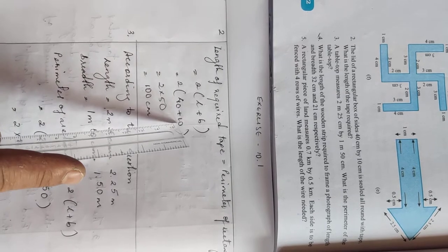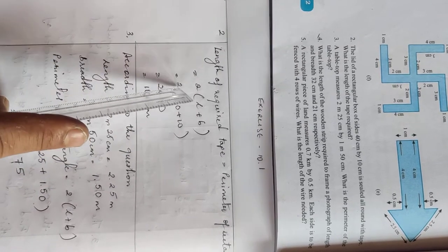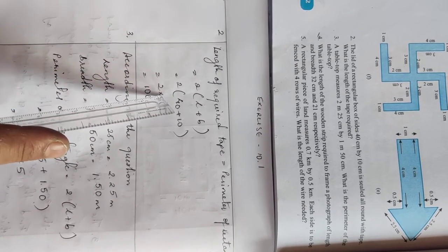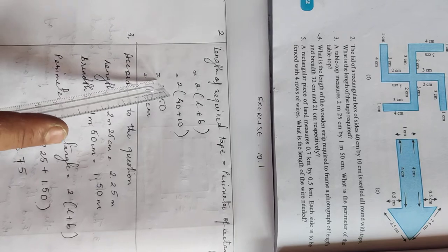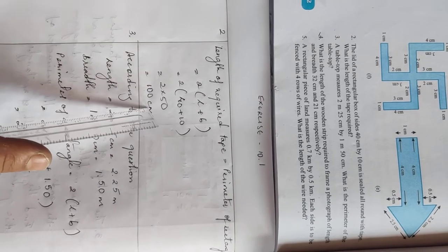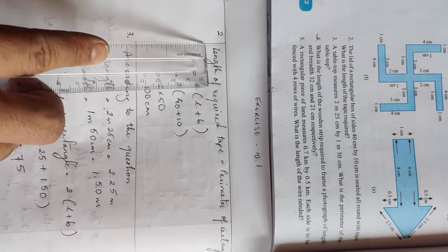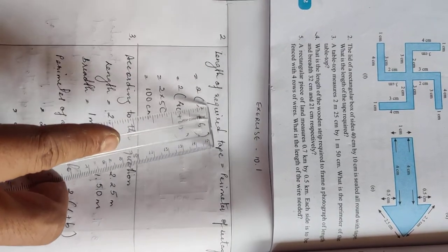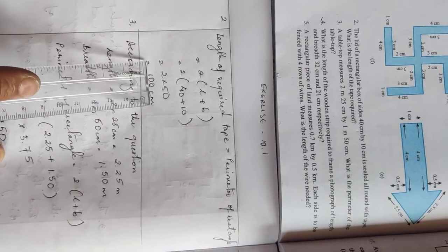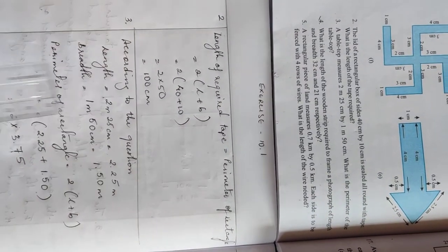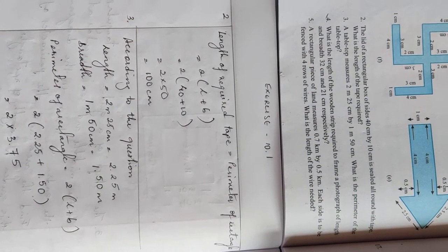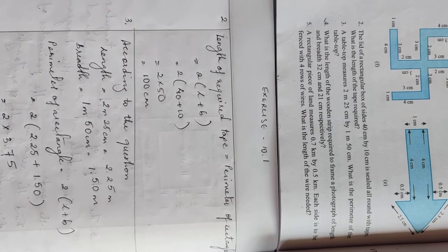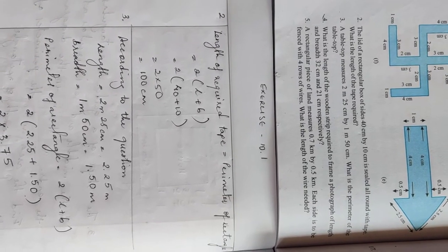40 plus 10 is equal to 50, and multiply with 2: 50 times 2 is equal to 100 centimeters. Therefore, the length of the required tape is equal to 100 centimeters.